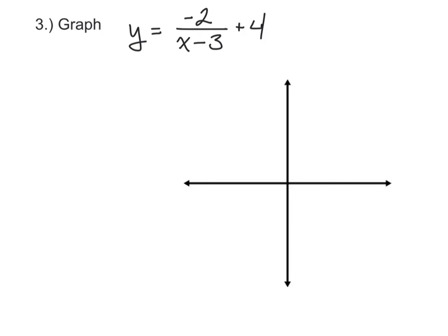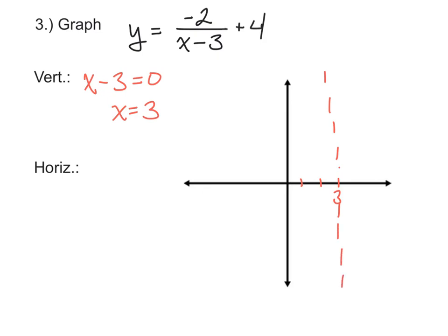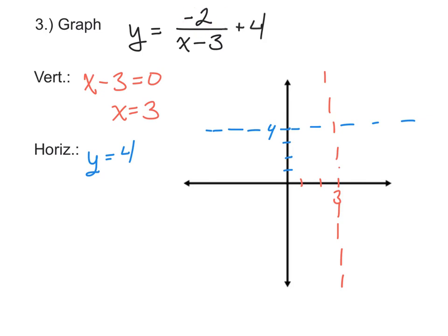Let's do one more: y equals negative 2 over x minus 3 plus 4. First, the vertical asymptote — set x minus 3 equal to 0, so x equals 3. Draw a vertical dotted line at 3. Next, the horizontal asymptote — the constant added outside the fraction is 4, so y equals 4. Draw a horizontal dotted line at 4. Finally, check for reflection: the numerator is negative 2, so the graph is reflected over the x-axis. Instead of being in the upper right, the branch is in the lower right, and instead of lower left, it's in the upper left. And there's a good sketch of the reciprocal function.